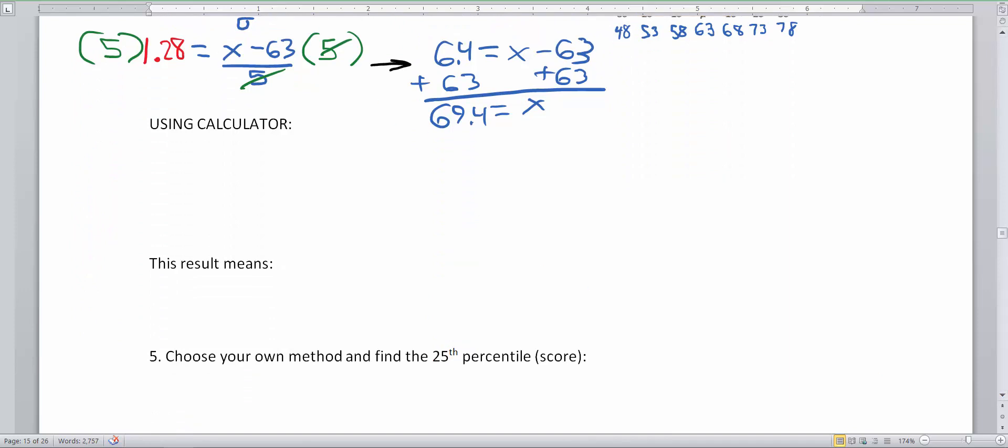So using the calculator, there's a cool set of commands inside the vars menu. So you hit the second button once, let go, and then click the vars button. Now this takes you to the distribution menu.